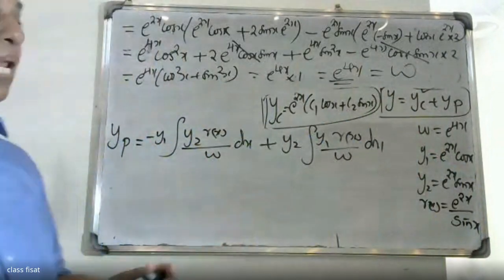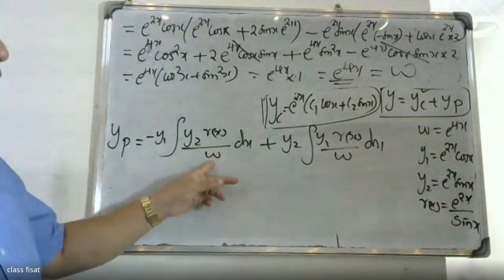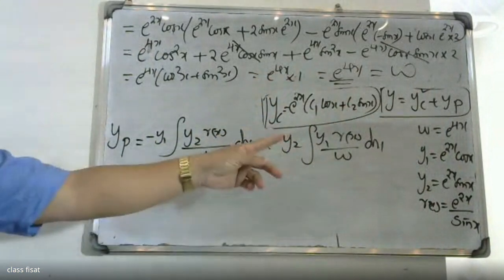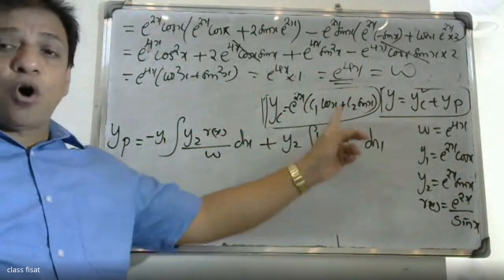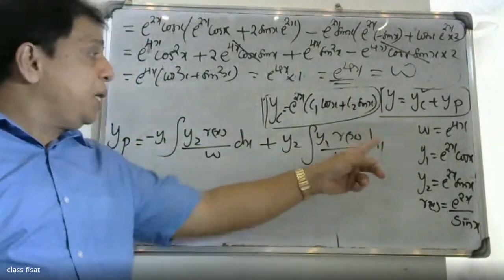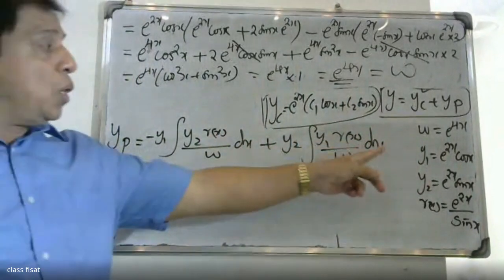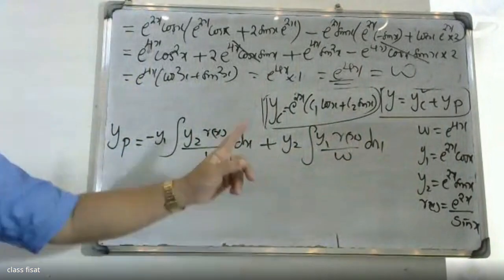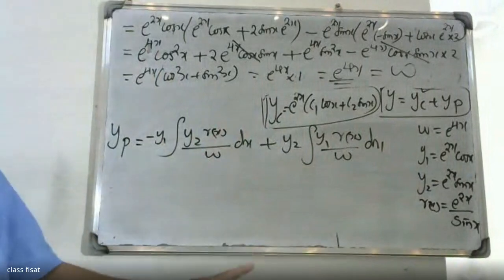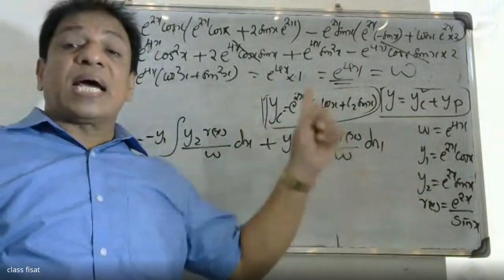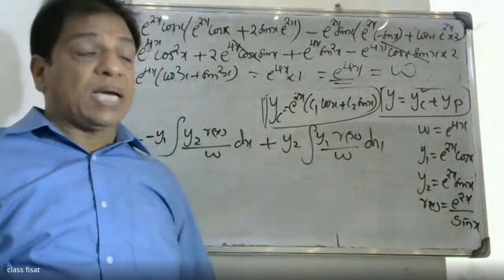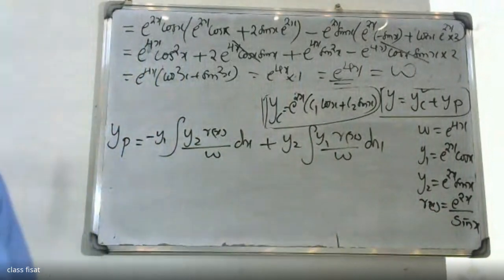Now we have to calculate the Wronskian W = e^(4x). The y1 coefficient is e^(2x)·cos(x) and the y2 coefficient is e^(2x)·sin(x). We also have r(x) = e^(2x) / sin(x).